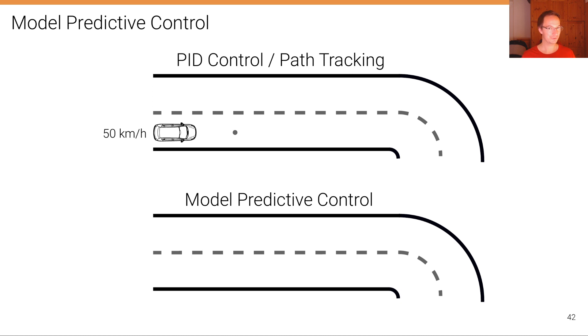Finally, let's look at a concrete example to illustrate why model predictive control is important, particularly if we consider high-speed driving. At the top, you can see an example for a classical PID or path tracking controller.